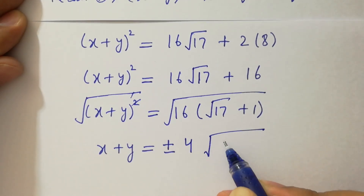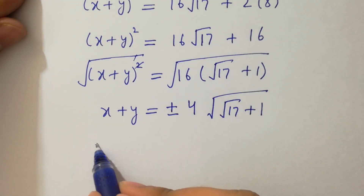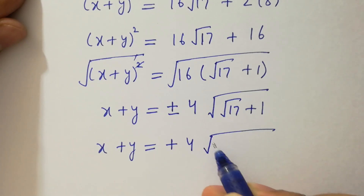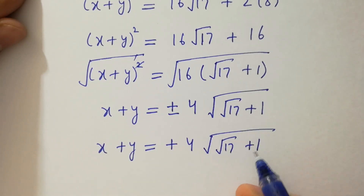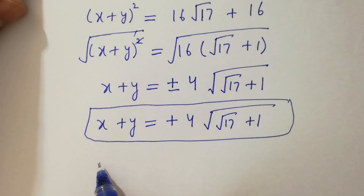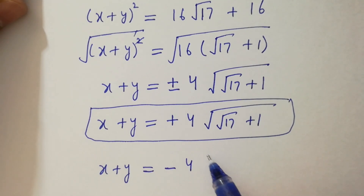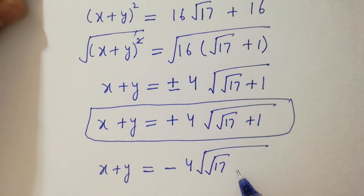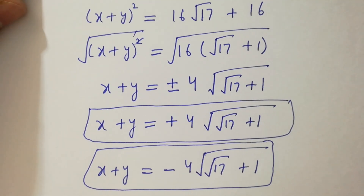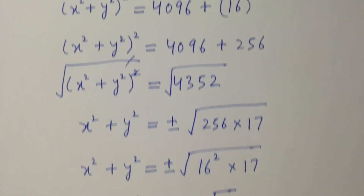So we have two values of x plus y: x plus y equals positive 4 square root of square root of 17 plus 1, and x plus y equals negative 4 square root of square root of 17 plus 1. Thanks for watching this video. Please subscribe to this channel to get notifications of my new videos. Okay, bye.